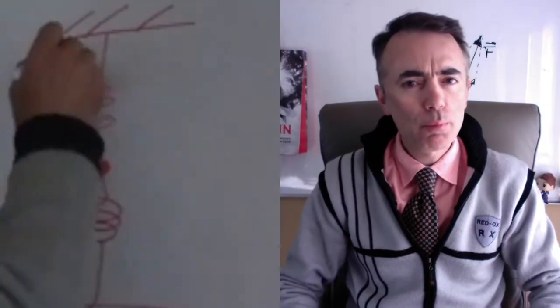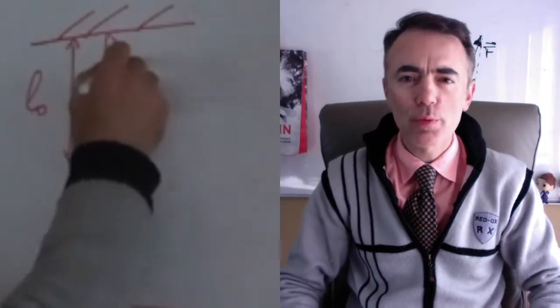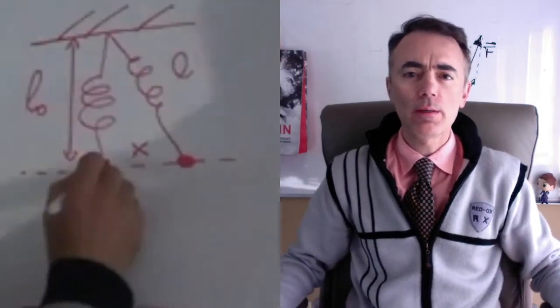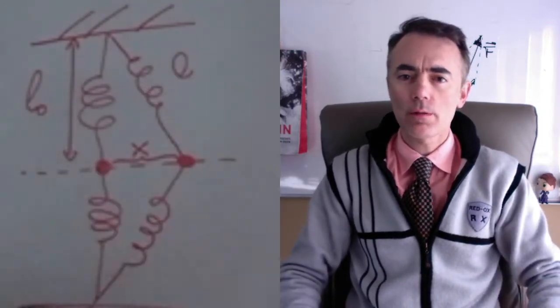In the previous video I solved a simple problem of two springs and a bob with nonlinear oscillations. Today I'm going to take the same problem but I'm going to assume that the springs, when they are vertical, they are already stretched.